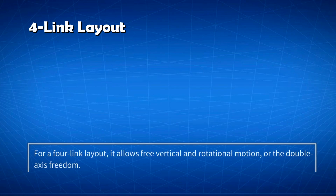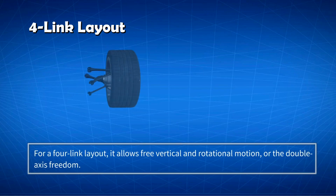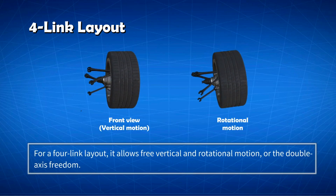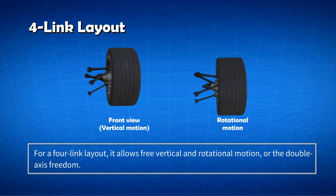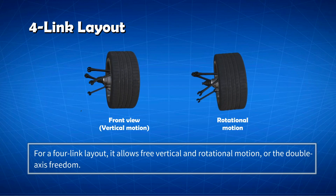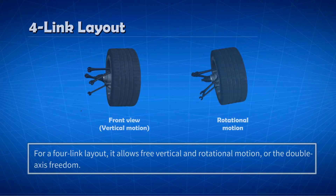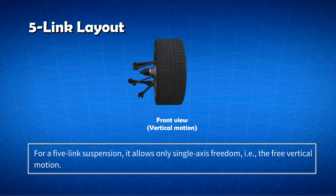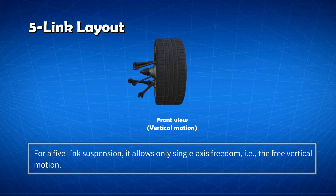For a four-link layout, it allows free vertical and rotational motion, or double-axis freedom. For a five-link suspension, it allows only single-axis freedom — the free vertical motion.